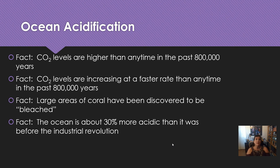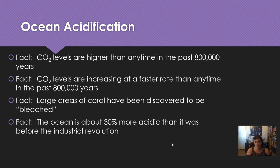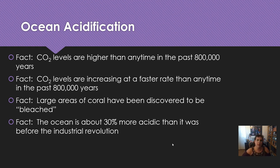Some facts: CO2 levels are higher than any time in the past 800,000 years. We've recently passed 420 parts per million in our atmosphere, whereas before the industrial revolution, we were around 280. So humans have caused that large of an increase. CO2 levels are also increasing at a faster rate than any time in the past 800,000 years — right now we are going up at a very fast, steep rate.